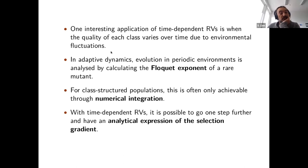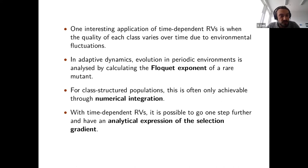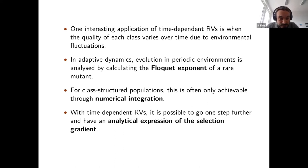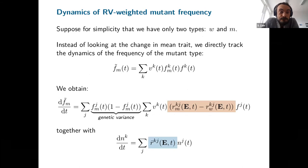With these time-dependent reproductive values, we have a measure of the quality of each class as it varies over time due to fluctuations. We know how to handle periodic dynamics in adaptive dynamics: we can compute invasion fitness using the Floquet exponent of a rare mutant. This is well known but not very often used for class-structured populations, mainly because results can often only be achieved by numerical integration — a bit frustrating for theoreticians. With time-dependent reproductive values, it's possible to go one step further and obtain an analytical expression of the selection gradient.